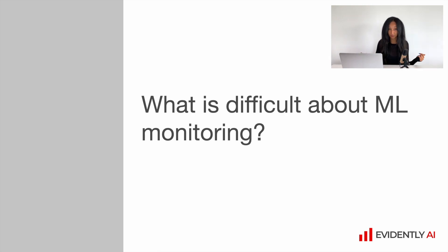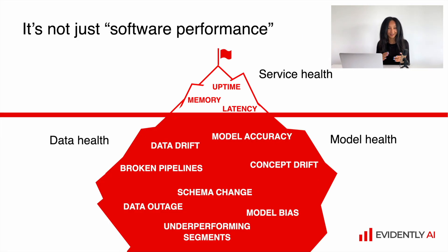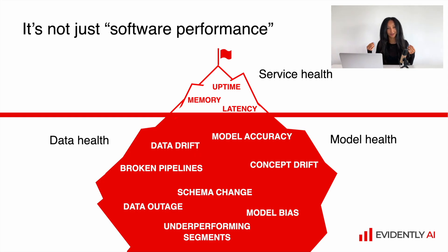What is difficult about machine learning monitoring? Actually, we are quite lucky because we have software services deployed to production for ages and we can reuse quite a lot of experience from those monitoring efforts. When we deploy a machine learning model to production, it's already a production software service and we need to implement monitoring for metrics like uptime, memory usage, disk usage, latency, and things like this. So here we can go and use the standard way. But together with service health, we have two extra layers — data health and model health — and we need to care about both.